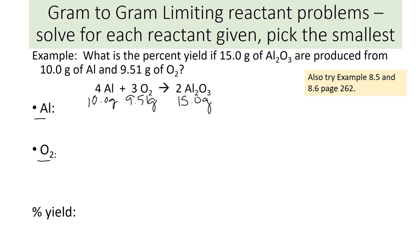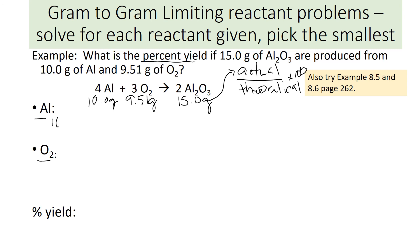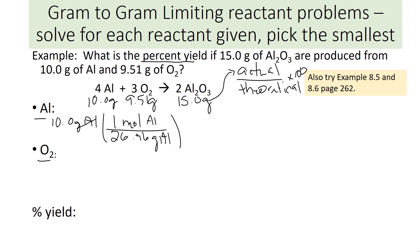We have 15.0 grams of Al₂O₃, 10 grams of aluminum, and 9.51 grams of oxygen written under the reaction. We're given both reactants, so we solve it twice. The 15.0 grams of Al₂O₃ is our actual yield — we hold onto it for the end. First, solve with 10.0 grams of aluminum: divide by molar mass 26.98 grams Al per one mole Al.